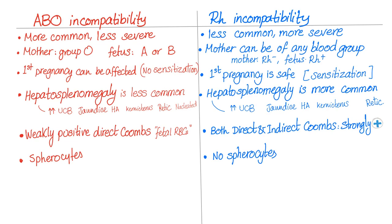Did you know that ABO incompatibility can prevent the mother from developing RH sensitization? For example, if the mother is blood group O, RH negative, and she is carrying a fetus who is blood group A, RH positive, then any RH positive fetal red blood cells entering her circulation will be destroyed by maternal anti-A IgM agglutinins, therefore preventing RH sensitization.